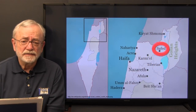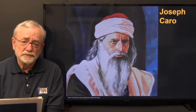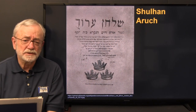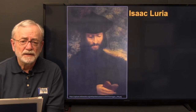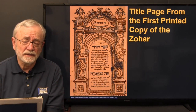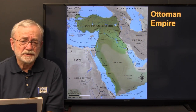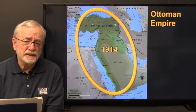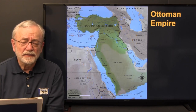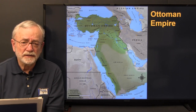During the Ottoman period, Safed was the center of Jewish population and learning. Joseph Karo lived in Safed and wrote the Shulchan Aruch, designed to guide Jewish life. Isaac Luria was also active during this period and promoted the Zohar. The Ottoman Empire eventually shrank — by 1914 it consisted basically of Arabia and Turkey, and by 1923 it had been reduced simply to the area of Turkey.